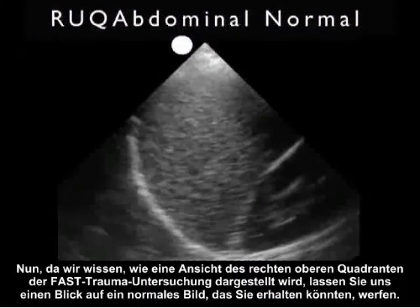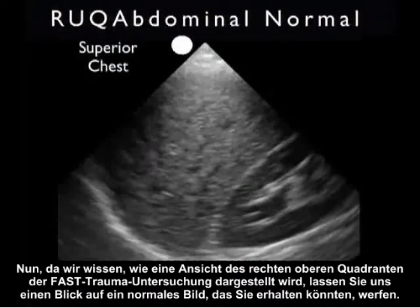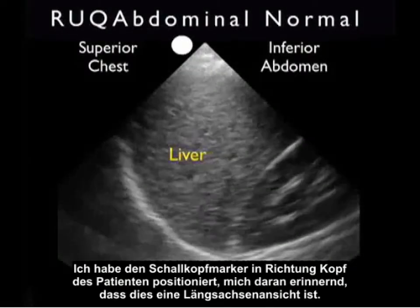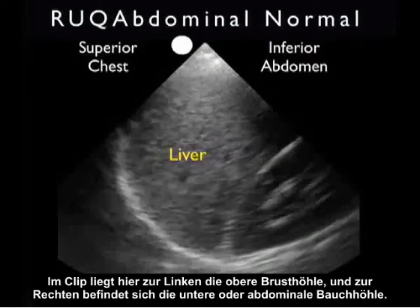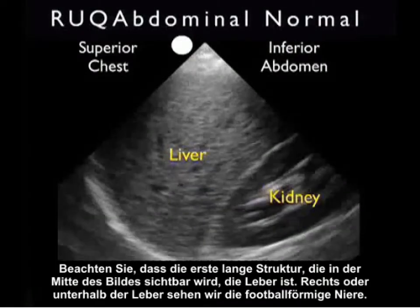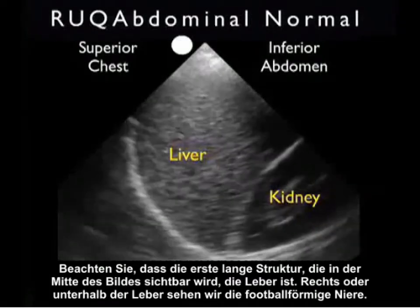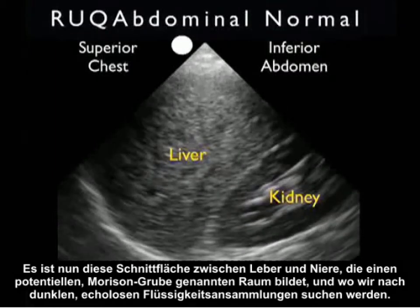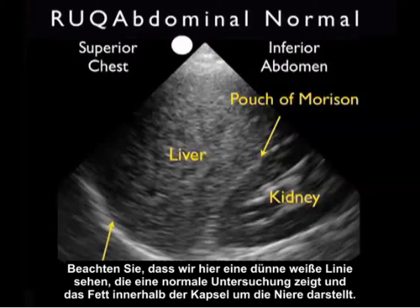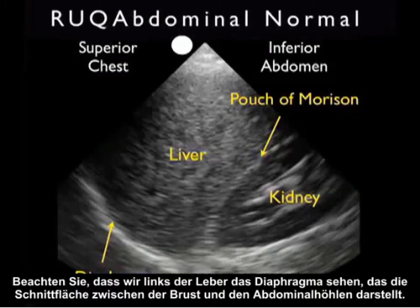Now let's take a look at a normal image that you might obtain. This is a long axis view with the probe marker positioned towards the patient's head, so towards the left of the clip is superior or chest cavity, and towards the right is inferior or abdominal cavity. The first large structure in the middle of the image is the liver, and to the right or inferior to the liver we see the football-shaped kidney. That interface between the liver and kidney represents a potential space known as Morrison's pouch, where we look for dark, anechoic fluid collections. Here we see a thin white line representing the fat within the capsule around the kidney. Notice to the left of the liver we see the white diaphragm, representing the interface between chest and abdominal cavities.